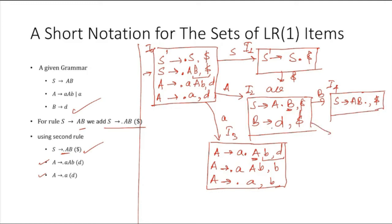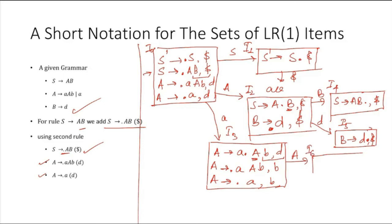For capital-A in I3 we can have a move to I6. In I6 we have A to small-a capital-A dot B, with lookahead D. For small-a in this state, we get capital-A to small-a dot capital-A B with lookahead B.